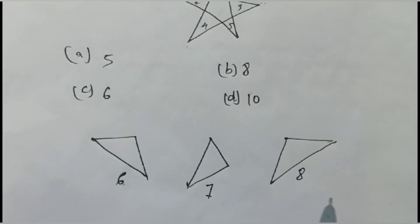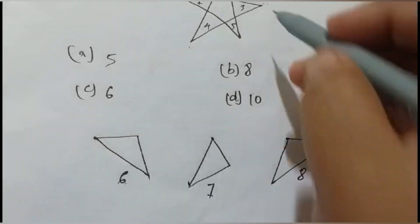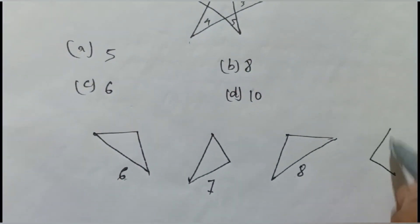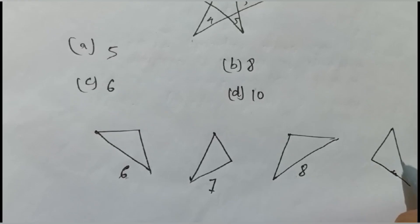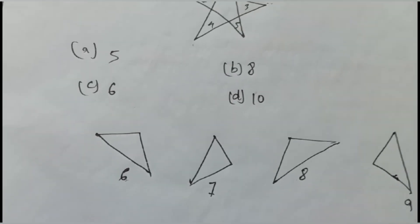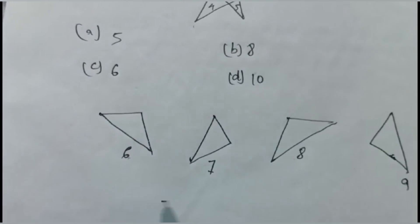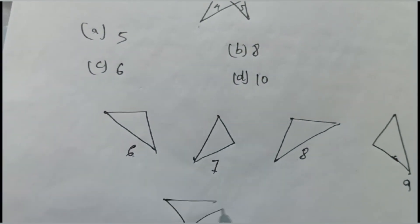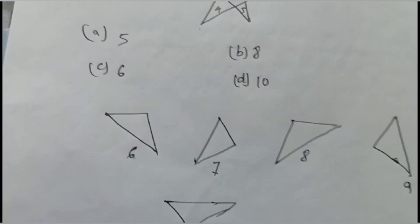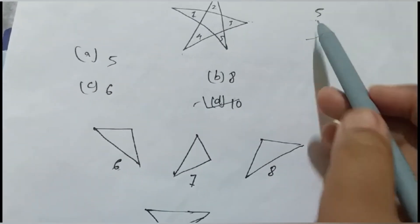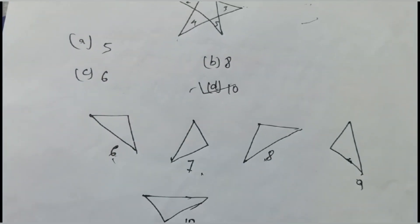And nine is this one. This is nine. And ten is which one? Ten is this one. That means how many triangles are there in a star? That is ten triangles. Five, six, seven, eight, nine, ten.